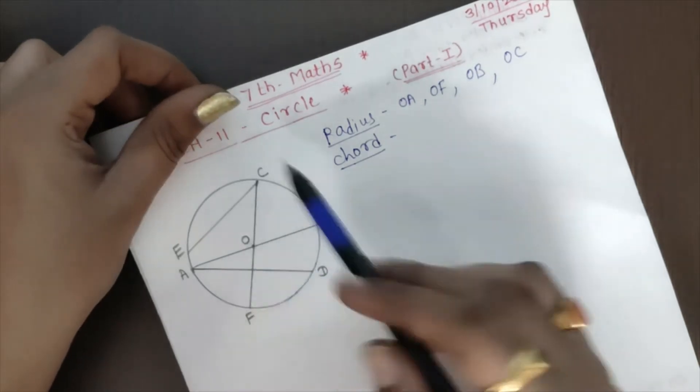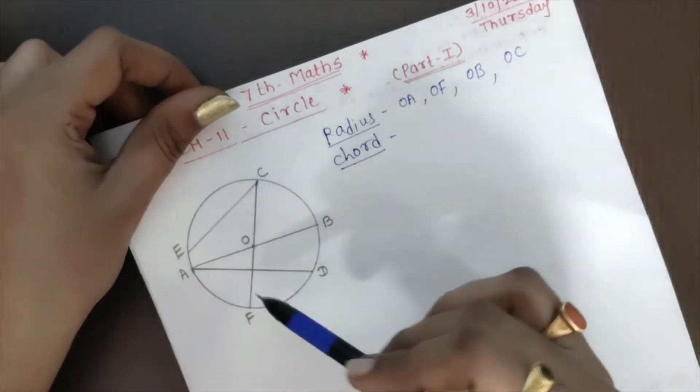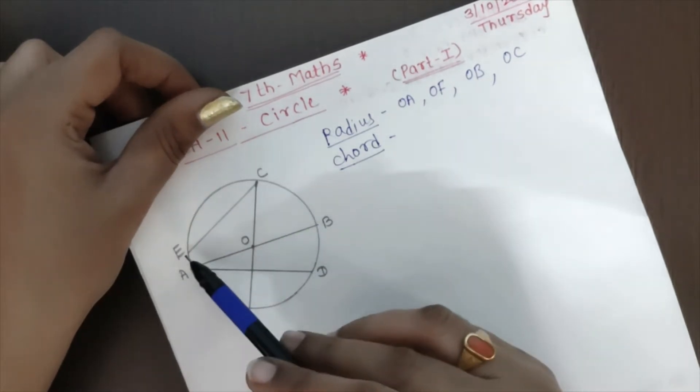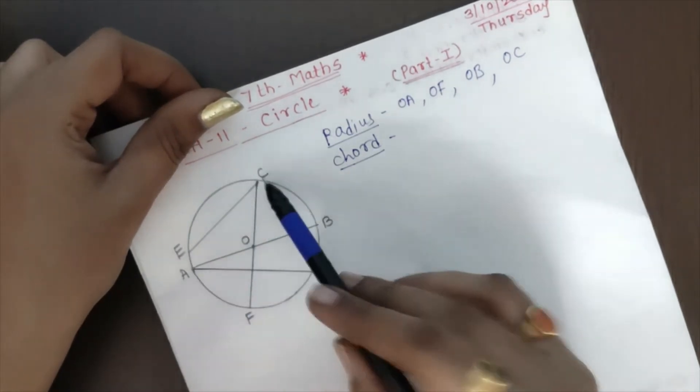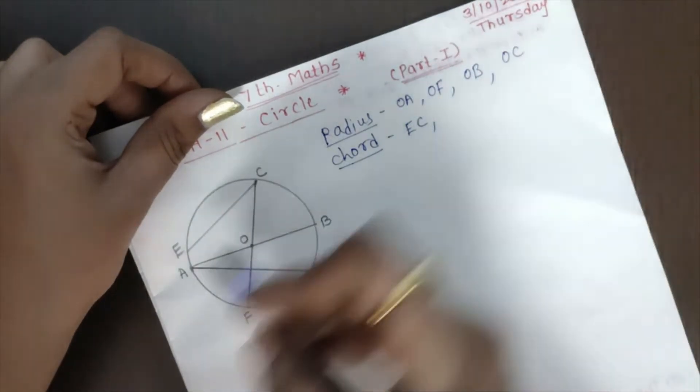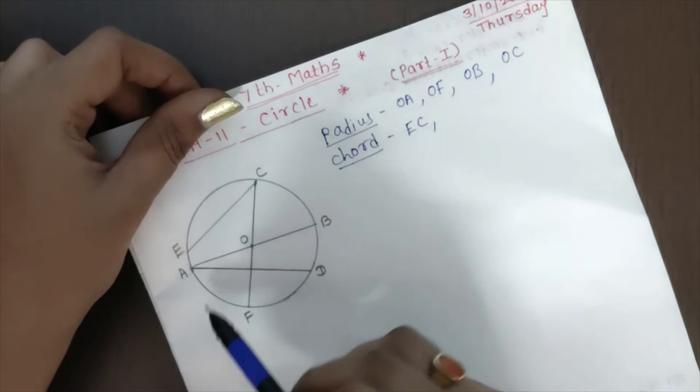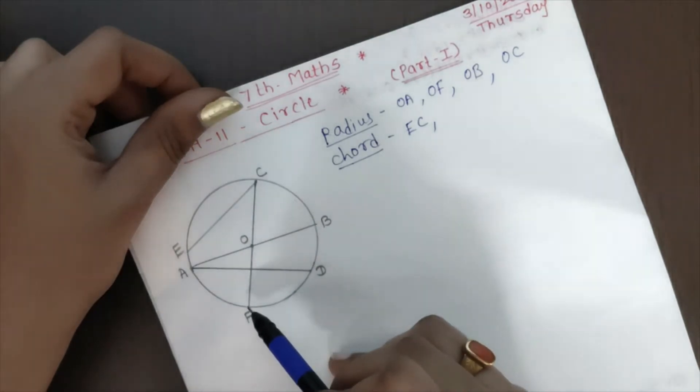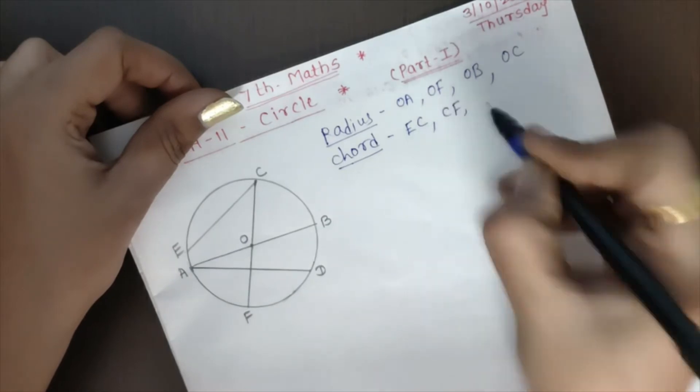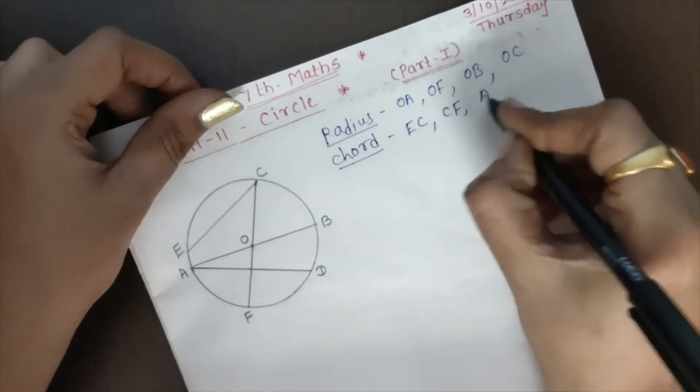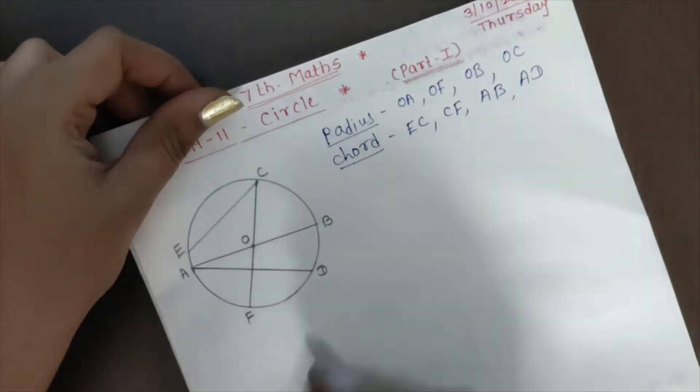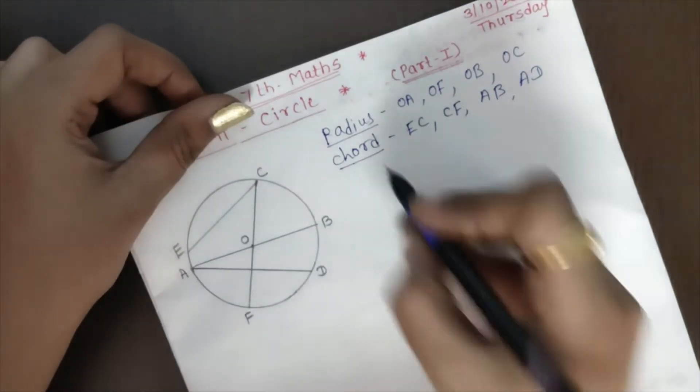So this chord EC, write down EC. Then, again next to which? CF, then AB, then AD. This AD is also called. Okay?